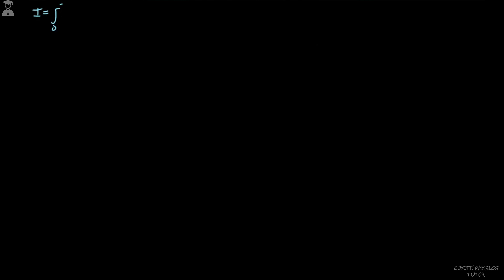We have the integral I equal to the integral from 0 to 2π of cosine(mx) cosine(nx) dx. We're using the same assumptions as the previous videos, where m and n are integers.